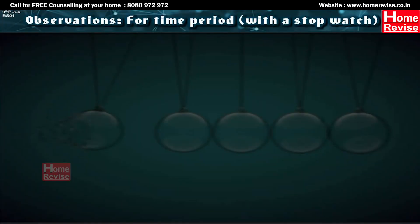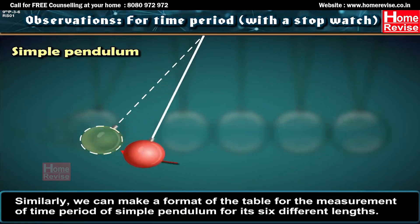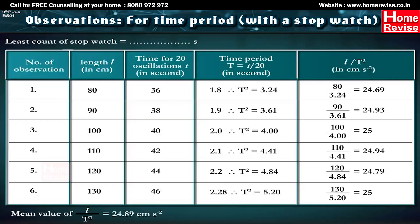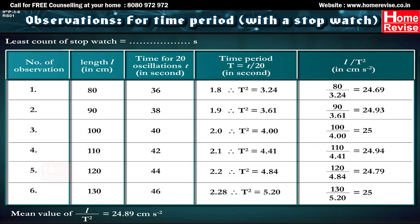Similarly, we can make a format of the table for the measurement of the time period of a simple pendulum for its six different lengths. Here we have four columns: A for length L of pendulum, B for time t of 20 oscillations, C for time period T, and D for the ratio L/T² — with six rows.